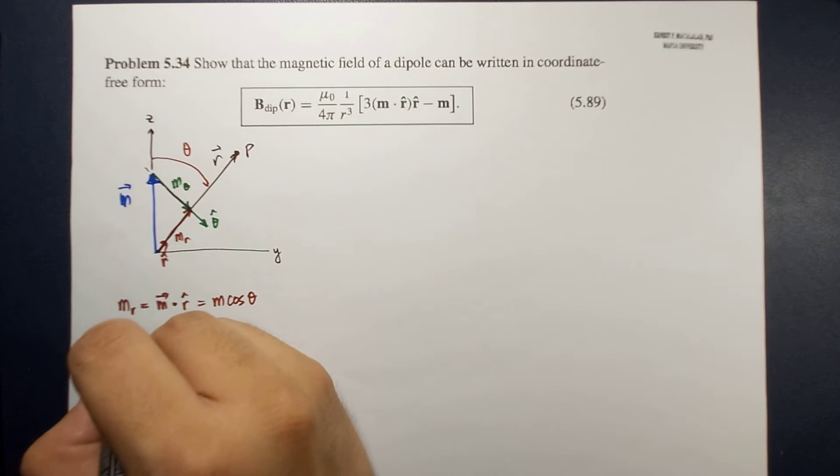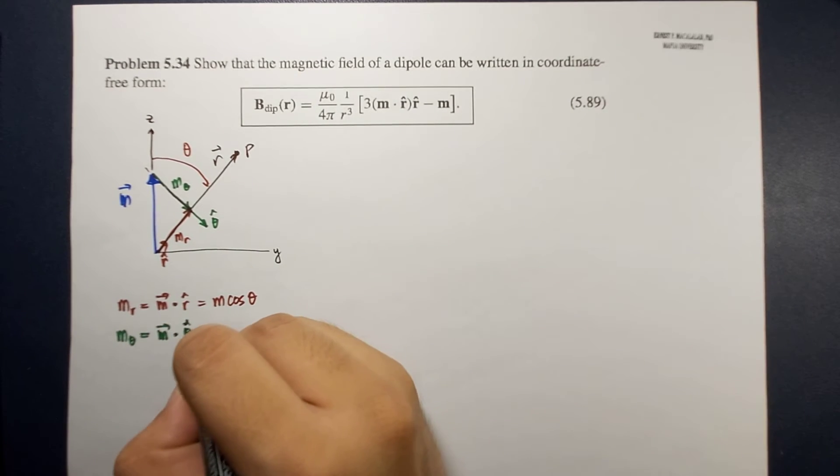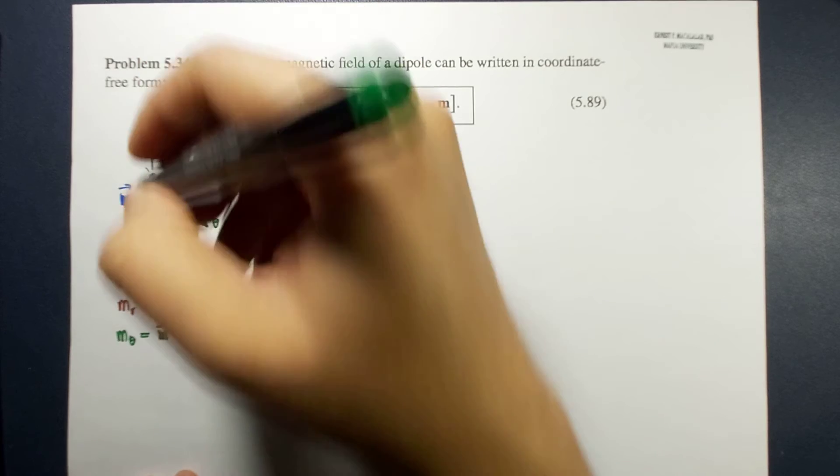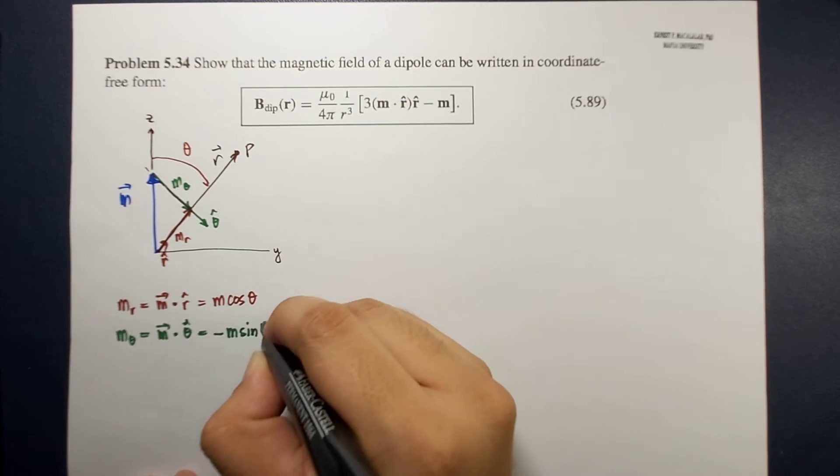So we define that or we express that m_theta would be m dot theta hat, which is in this direction that's negative. So negative m sine theta.